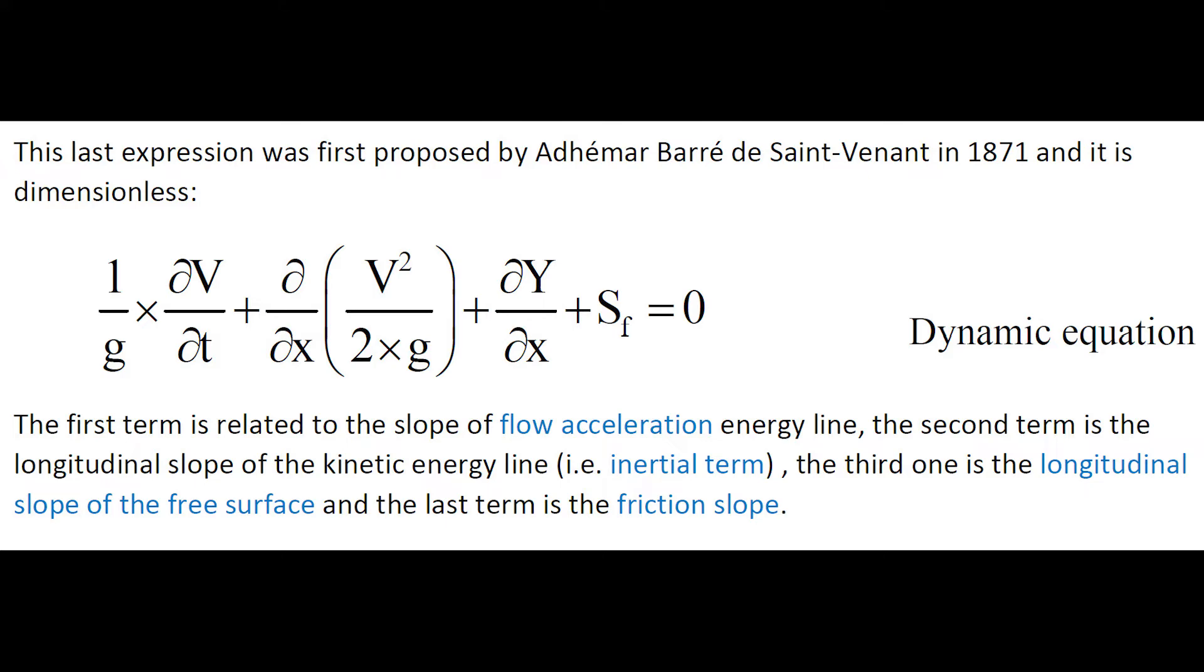The first term is related to the slope of flow acceleration energy line, the second term is the longitudinal slope of the kinetic energy line (i.e. inertial term), the third one is the longitudinal slope of the free surface, and the last term is the friction slope.